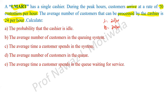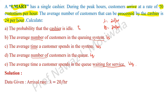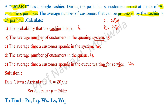We need to find: probability that the cashier is idle — that is P0; average number of customers in the queuing system — that is Ls; average time a customer spends in the queue — that is Wq; average number of customers in the queue — that is Lq; and average time a customer spends in the queue waiting for service — that is WQ. So we need to find P0, Lq, Ws, Ls, and WQ.